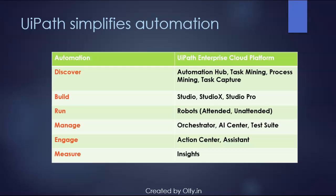The enterprise platform incorporates the discovery phase, build phase, run, manage, engage, and measure phases of automation. In the discovery phase, you can scale your digital transformation initiatives by taking advantage of the automation hub to identify candidates for RPA, and document manual processes leveraging task capture. Through process mining, it gives you data-driven insights through intuitive dashboards and visualizations. UiPath task mining automatically identifies and aggregates process workflows, then applies AI to map tasks to automation opportunities.